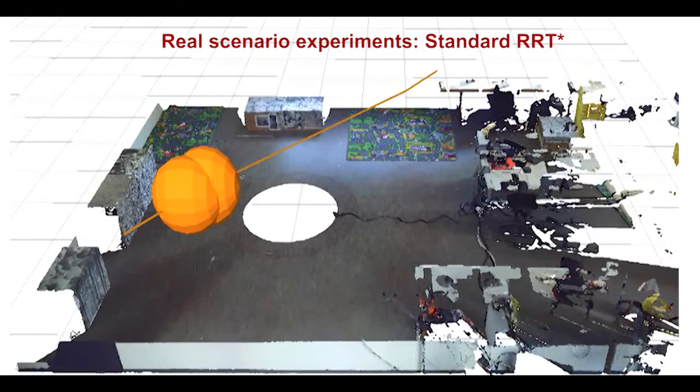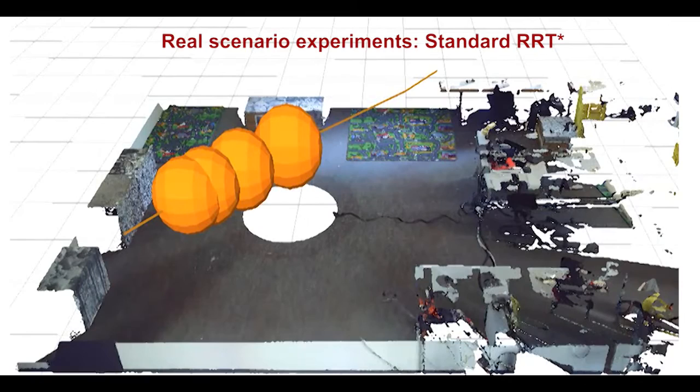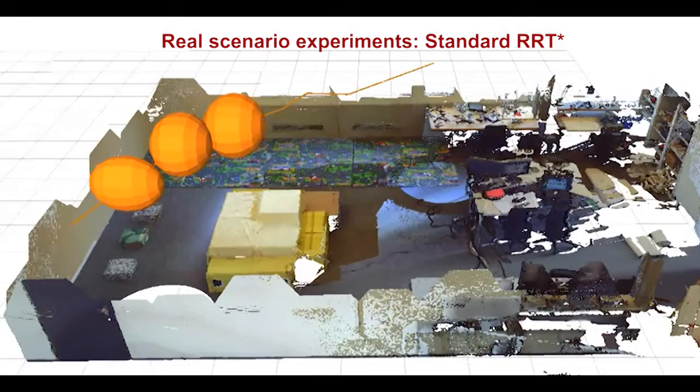We test our approach with a quadrotor equipped with a downward-looking camera. The results clearly show that the standard planner computes trajectories that provide pose estimates with very low accuracy.